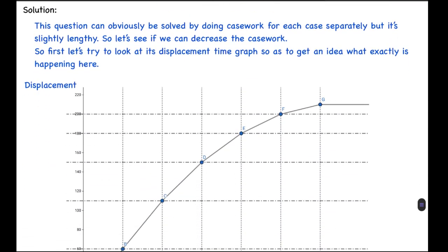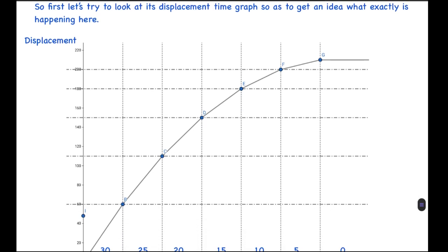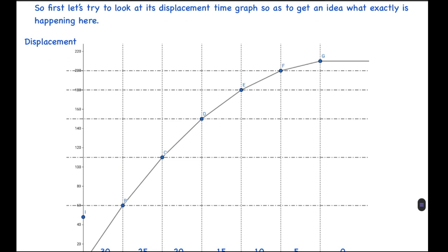Now let's look at the solution. We can clearly see that as the velocity can be divided into two-second intervals, this can obviously be solved by casework, but it's slightly inefficient. So I've tried to draw it with a graph so the casework reduces by a bit.